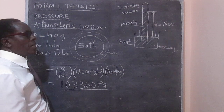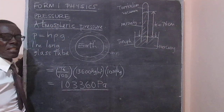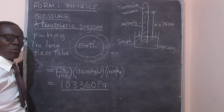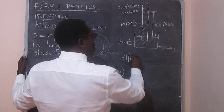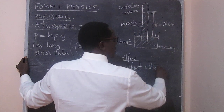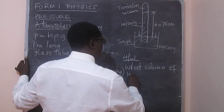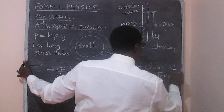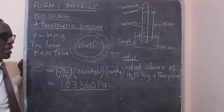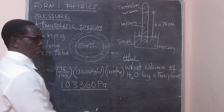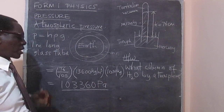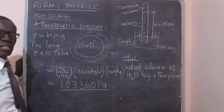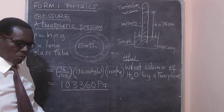The atmospheric pressure is found to be able to support a column of mercury 76 centimeters long. Now, suppose this experiment was done with water — what would we expect to be the column of water that can be supported by the atmosphere? If we were to use water instead of mercury, we would use the same formula, but this time with the density of water, which is 1,000 kilograms per meter cubed, and work out the required height.